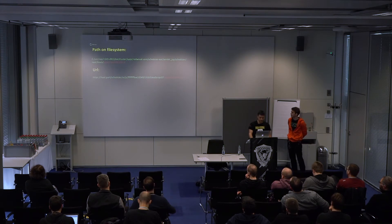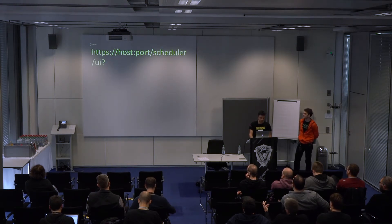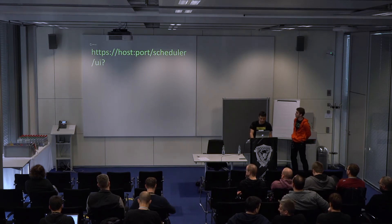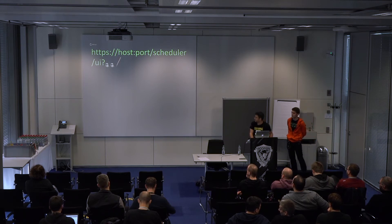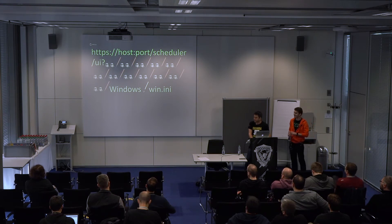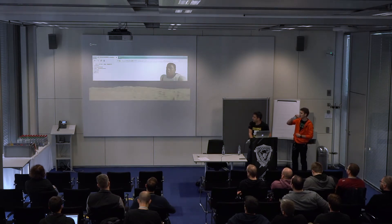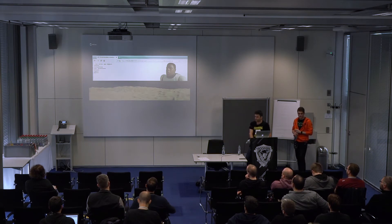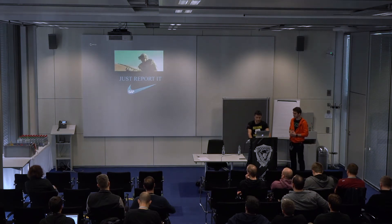After that, we took the scheduler servlet URL and appended dot-dot-slash many times, and finally we could read any file from the server. You can see that directory traversal is a very easy-to-reproduce vulnerability — you just need to type dot-dot-slash. We immediately reported this vulnerability to SAP; it was February of 2016. Directory traversal vulnerabilities are powerful, but to get critical data from the SAP server, you need to read and decrypt the secstore.properties and secstore.key files — after decryption you can see the administrator passwords.